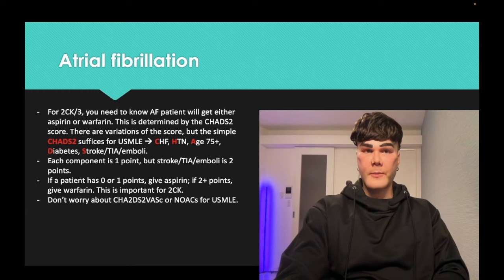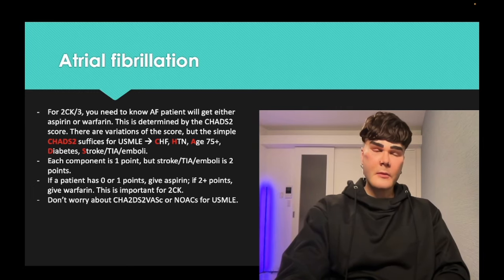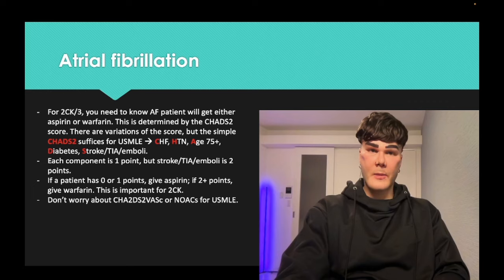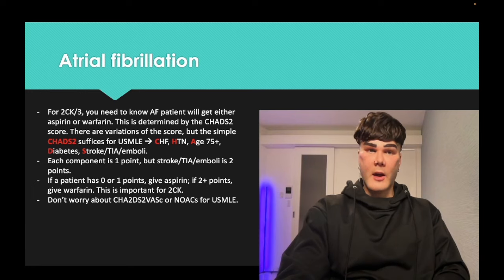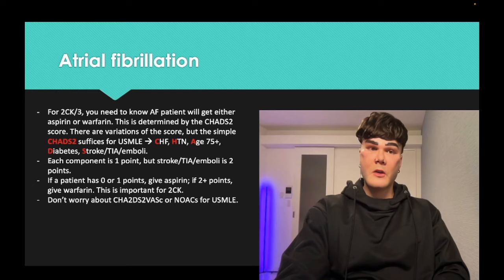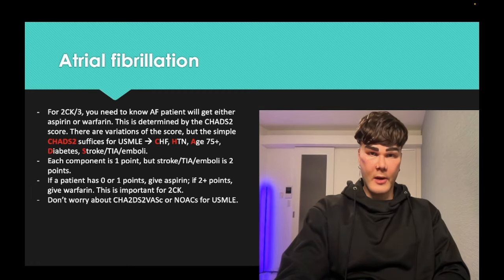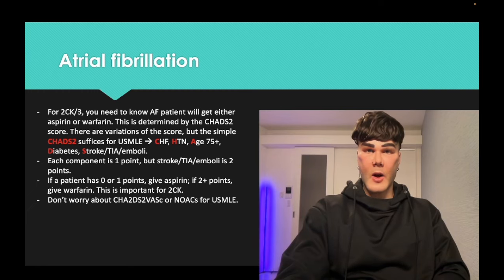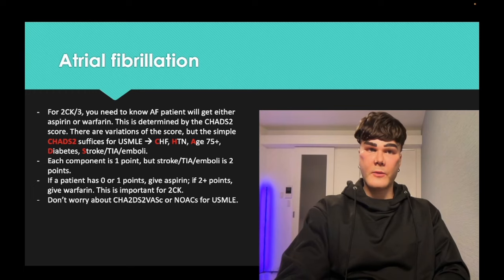CHADS2 score is how you determine whether to give antiplatelet therapy — aspirin — or anticoagulation, which is warfarin on USMLE. Simple CHADS2 suffices per NBME exams. You get a point for each of: congestive heart failure, hypertension, age 75 or greater, diabetes. The S is stroke, TIA, or embolic phenomena, which is two points. Zero or one points gets aspirin; two or more points gets warfarin. There are NOACs like apixaban and dabigatran, but USMLE tends to be old school and just use warfarin.